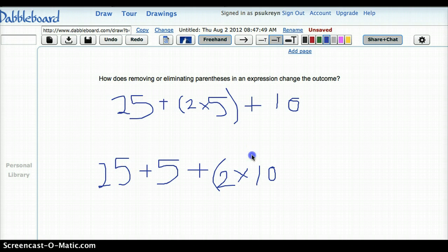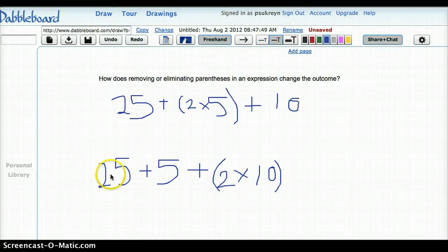Okay, now what I always like to do first is I like to compare the expressions. So things that are similar, we've got 25, we've got 5 and 2 in a different place here and then we have a 10. Now what's happening in the expressions is different too. In this first expression we're adding 25 to the product of 2 times 5 and then adding 10. On the bottom here we're going to add 25 and 5 and we're going to add that to the product of 2 times 10.